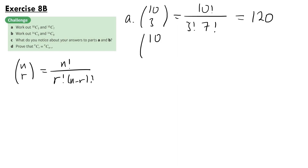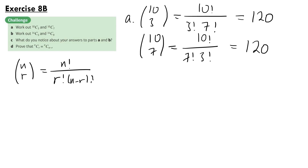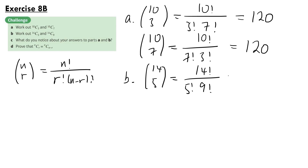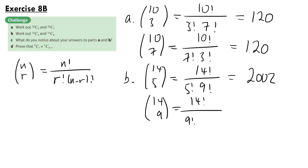Now doing the same for 10 choose 7, we have 10 factorial over 7 factorial times 3 factorial, and that's also equal to 120. Part B: work out 14 choose 5 and 14 choose 9. So 14 choose 5, using the same formula, gives 14 factorial over 5 factorial times 9 factorial, and putting that into your calculator you get 2,002. And doing the same for 14 choose 9, you get 14 factorial over 9 factorial times 5 factorial, which also equals 2,002.